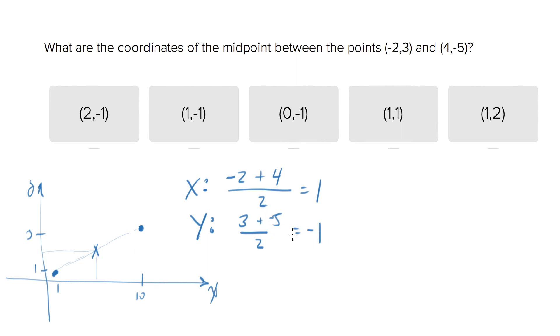All right, 3 minus 5 is -2, over 2 is -1. So the midpoint will be at (1,-1), which is the second answer choice.